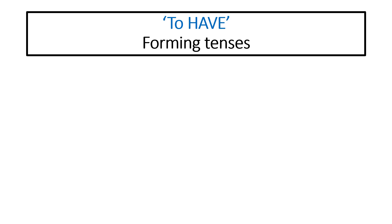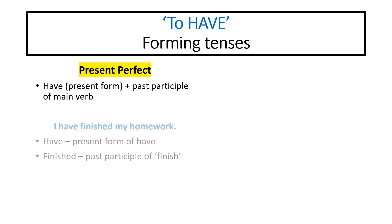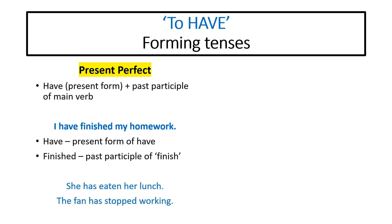Now, 'to have' verb forms also help determine tense structure. For present perfect tense: use the present form of 'have' plus the past participle of the main verb. For example: 'I have finished my work.' 'Have' is the present form, and 'finished' is the past participle of 'finish' — 'finish' with -ed added. Another example: 'She has eaten her lunch.' 'Eaten' is formed by adding -en to 'eat' — also a past participle. 'The fan has stopped working.' 'Stopped' is the past participle of 'stop', with -ed added.